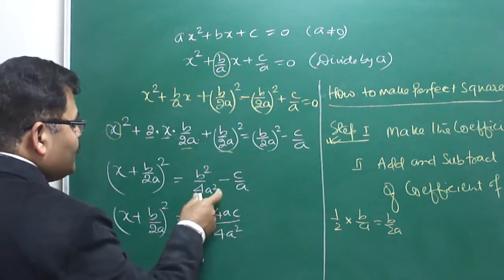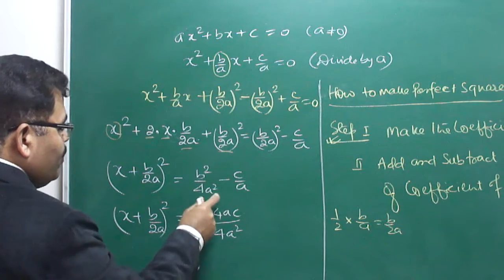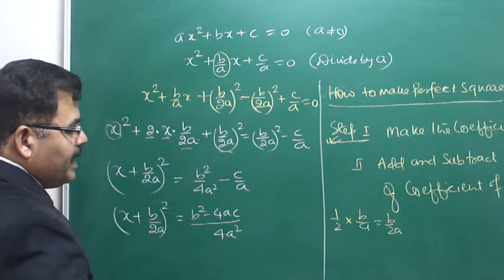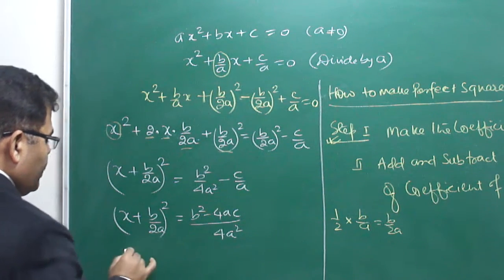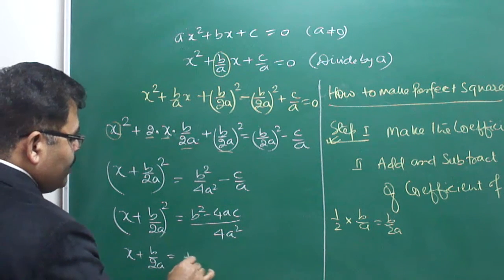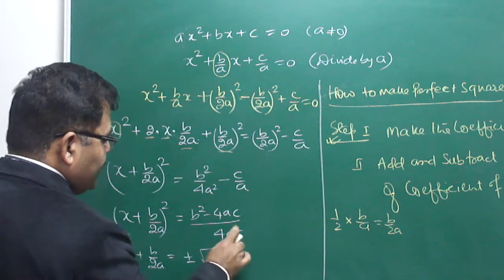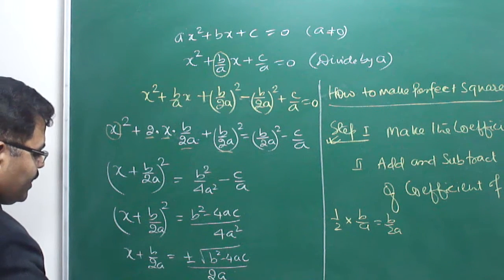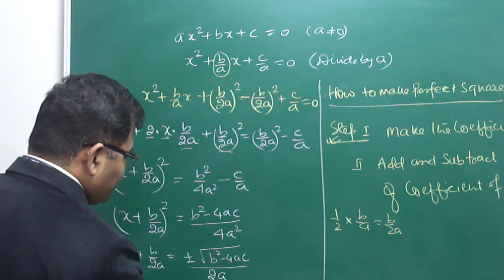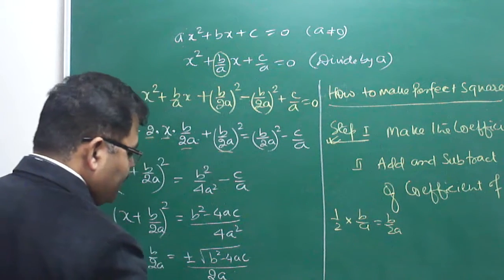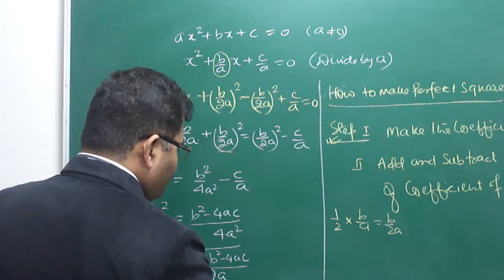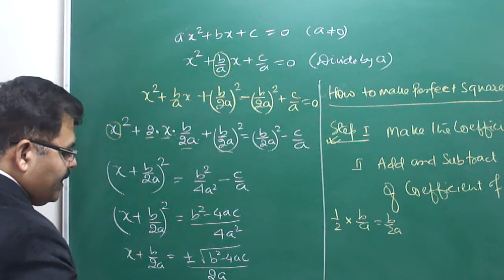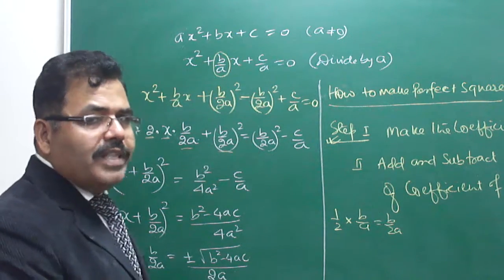Taking square roots of both sides: x + b/2a = ±√(b² − 4ac) / 2a. Therefore x = −b/2a ± √(b² − 4ac)/2a, which simplifies to x = (−b ± √D) / 2a, where D = b² − 4ac. This is the quadratic formula.